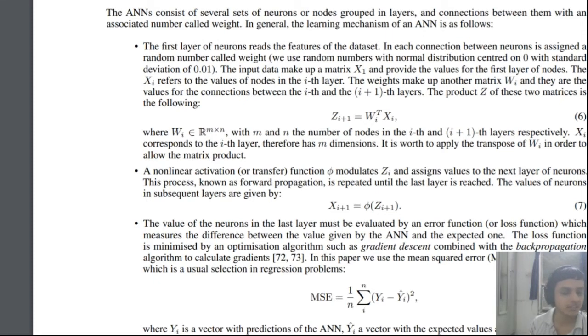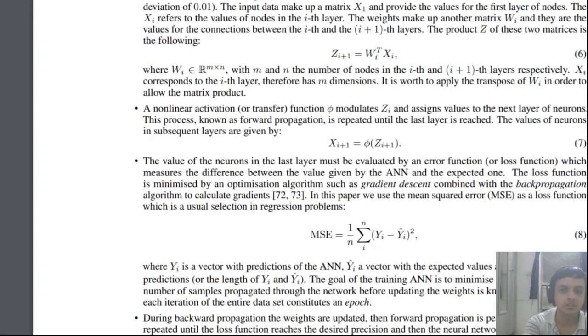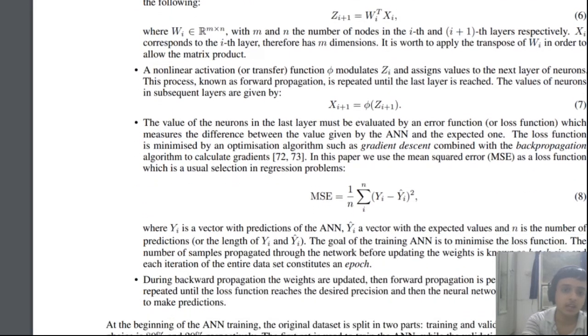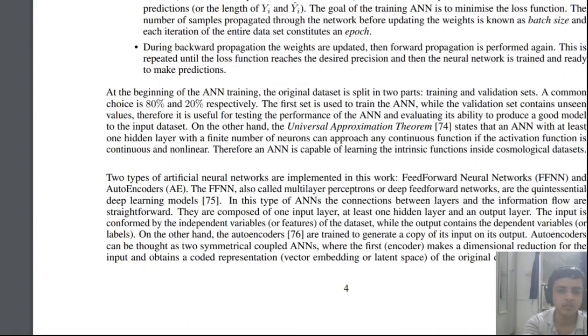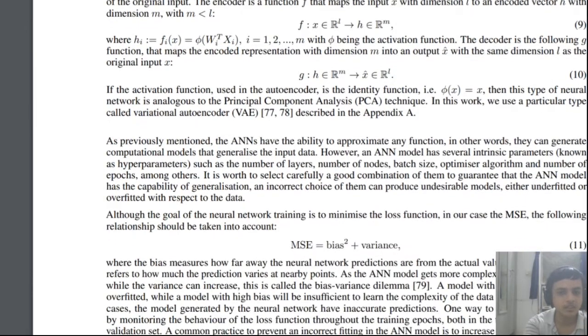You call them activation functions and there's few ways in which you optimize which is called loss functions. It's quite well known nowadays, it's kind of colloquial neural networks, so we don't go into the depths of it.